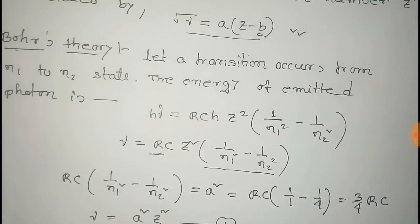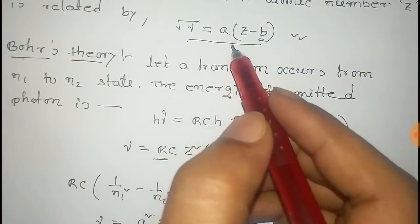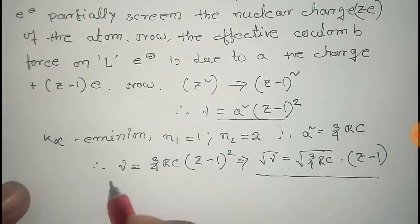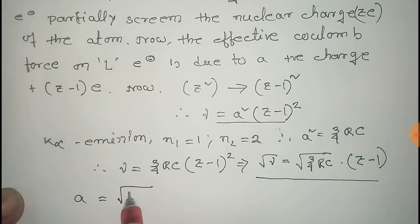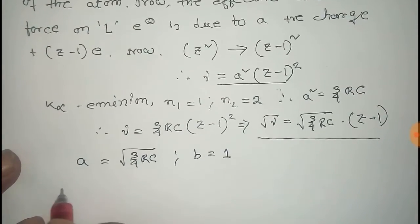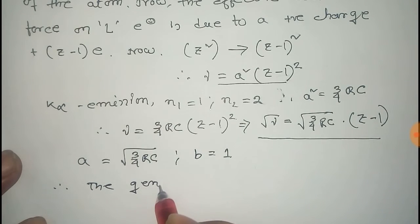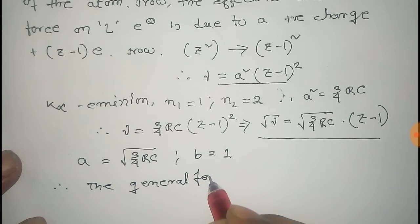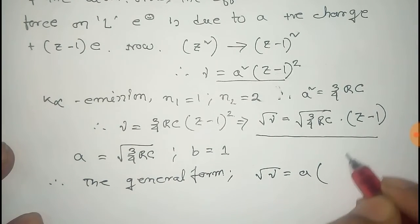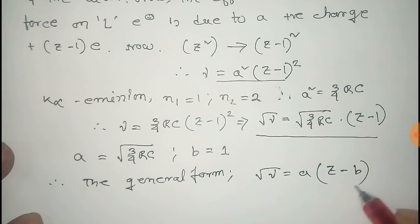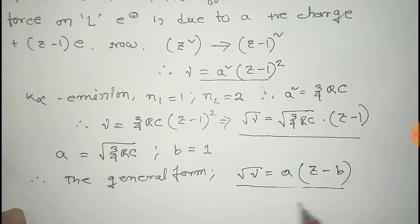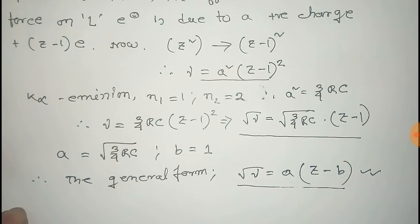Comparing the two equations, we get: a = √(3Rc/4) and b = 1. So the general form of Moseley's equation is: √ν = a(Z − b), where b is the screening constant. Thus we derive the general form of Moseley's equation using Bohr's theorem.